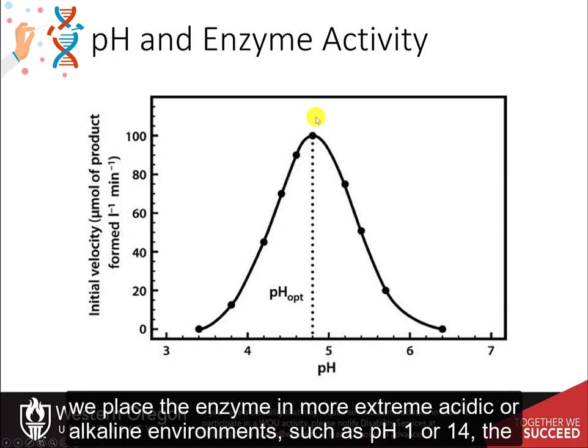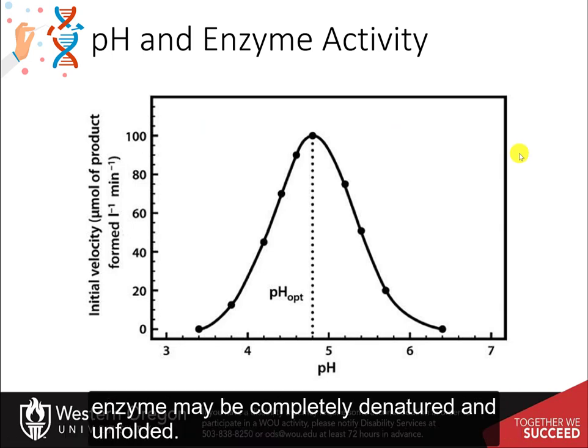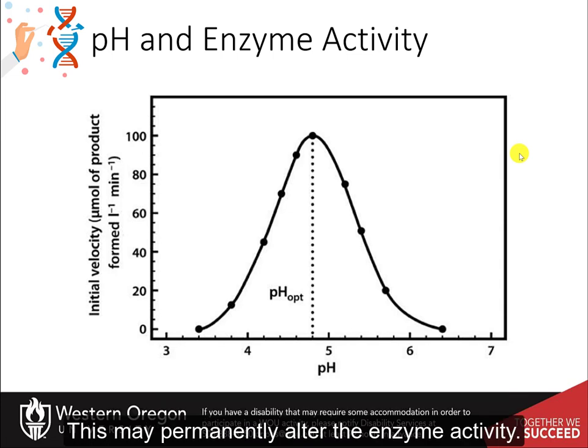However, if we place the enzyme in more extreme acidic or alkaline environments, such as pH 1 or 14, the enzyme may be completely denatured and unfolded. This might permanently alter the enzyme activity.